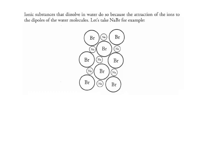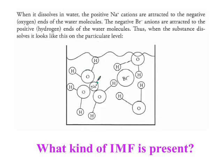Ionic substances as a solid have negative ions and positive ions repeating in a lattice. Ionic substances that dissolve in water do so because of the attraction of the ions to the dipoles of the water molecules—positive sodium is attracted to the slightly negative oxygen, and bromine is attracted to the slightly positive hydrogens. The water surrounds the ions, keeping them from going back together. This type of IMF is called ion-dipole.